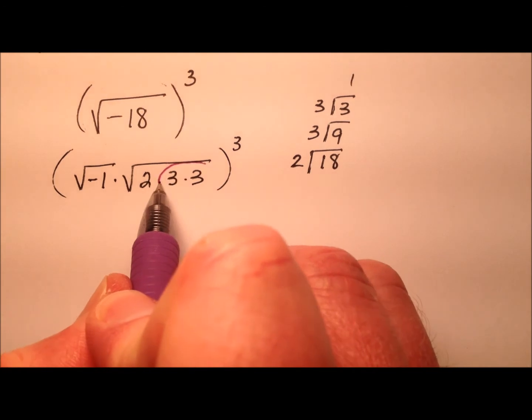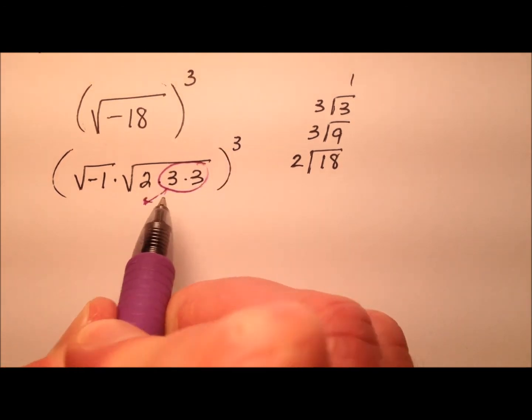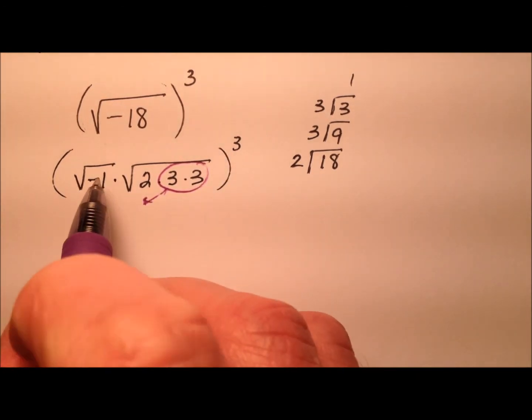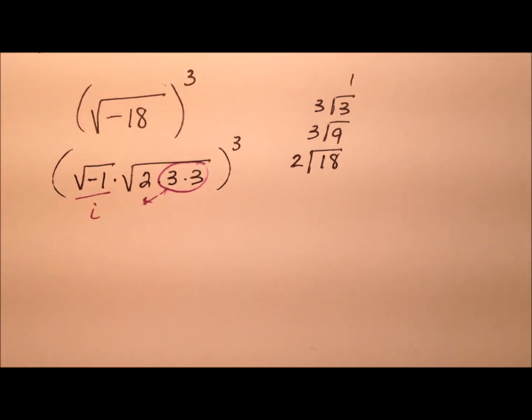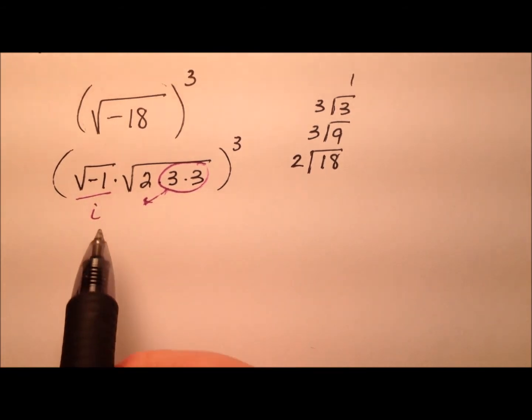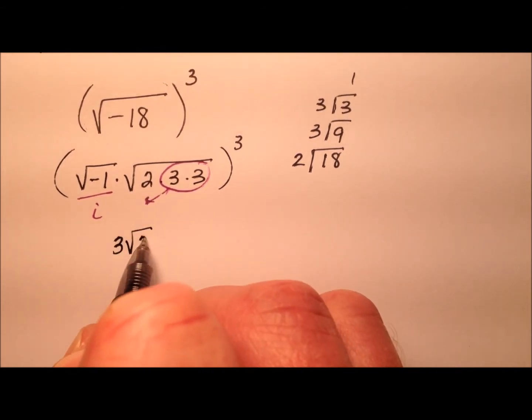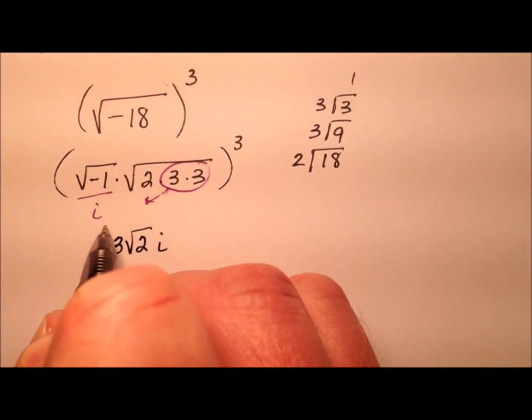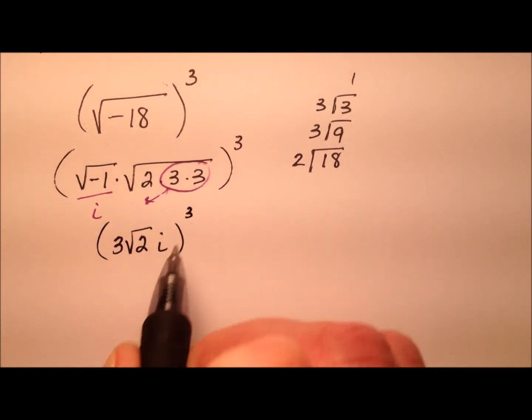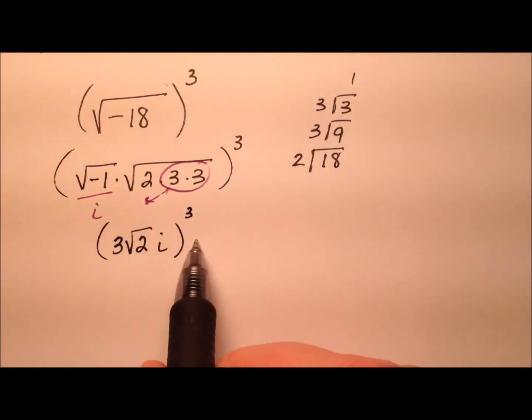So here we have a pair of 3's that will come out, and then this square root of negative 1 becomes an i. So let's go ahead and rewrite what we have inside here. The 3 came out front, the square root of 2 is left behind, and then we have the i that comes last. And then that's being cubed.